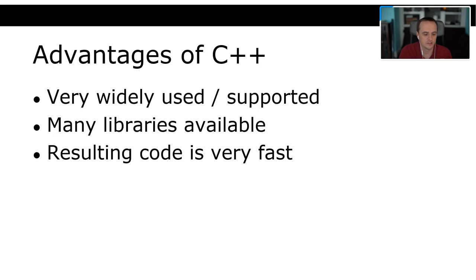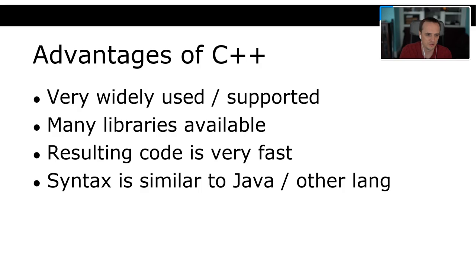If you write C++ in the correct way, the resulting code is very fast. But if you write it incorrectly, the same code could actually be slower than Java. We're going to see why — things like passing by value versus reference, and how you allocate things using the heap versus the stack. The syntax is also very similar to Java. According to my survey, every single person in this course has seen at least a little bit of Java.